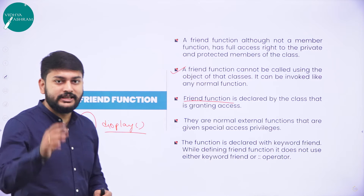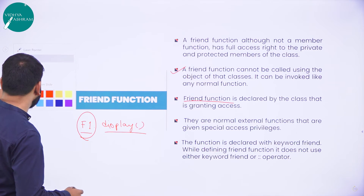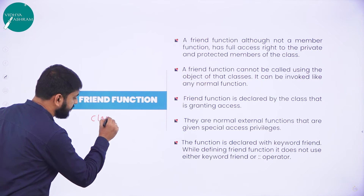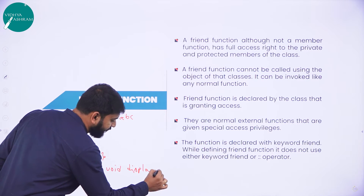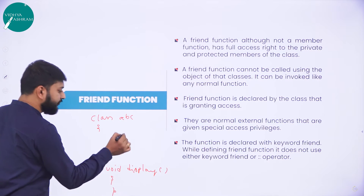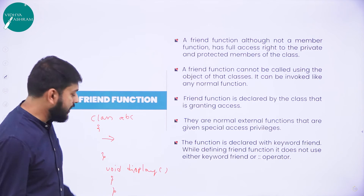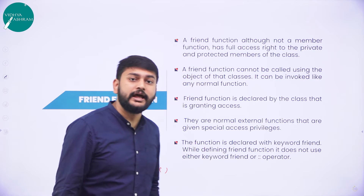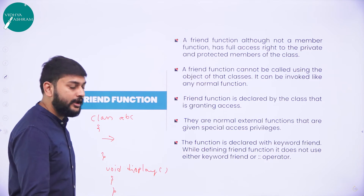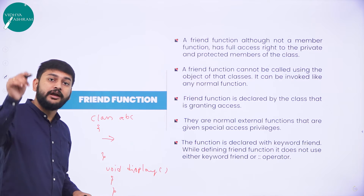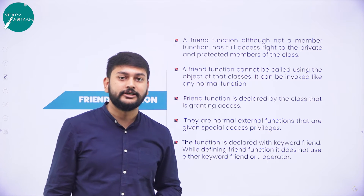The next point: friend function is declared by the class that is granting the access. Imagine I have class ABC. I have some function outside that wants to be a friend function. How do I know this function is a friend function of this class? I have to declare it inside this class using the keyword 'friend'. I have to declare this function inside the class using the keyword friend — only then can this function access the private or protected content of that class. That is what a friend function is.